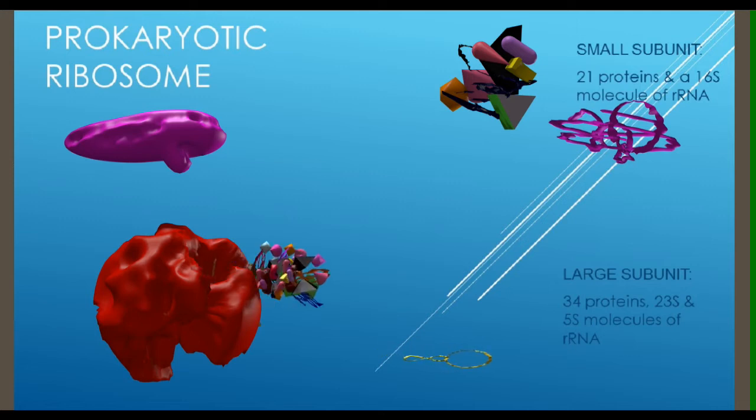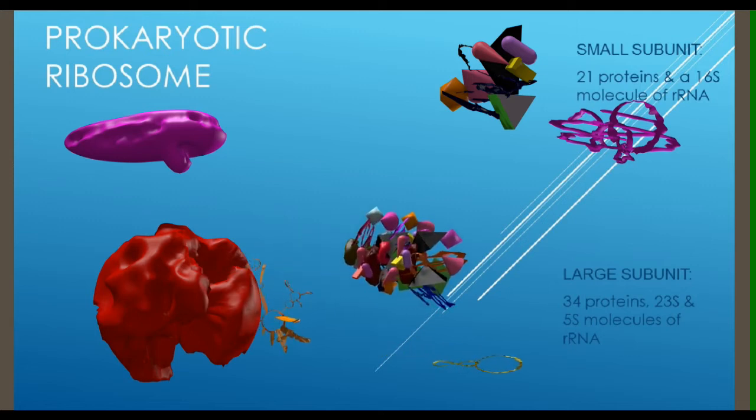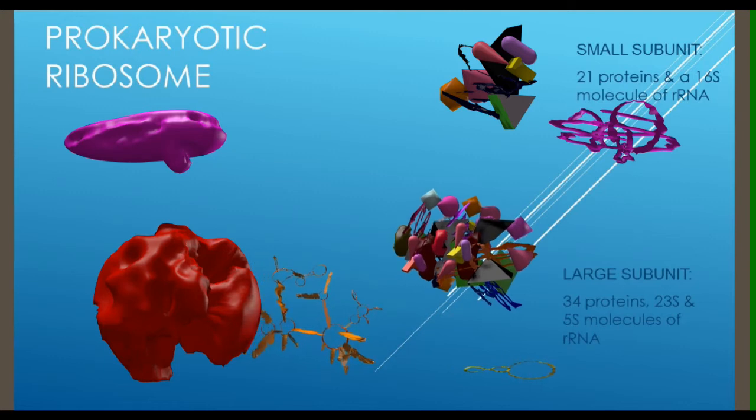The second larger subunit, 50S, contains 34 proteins, a 23S rRNA molecule, and a 5S rRNA molecule.